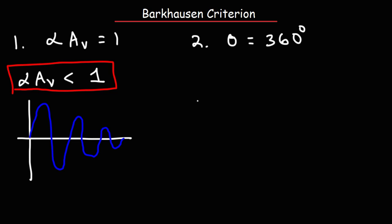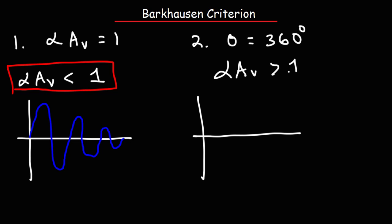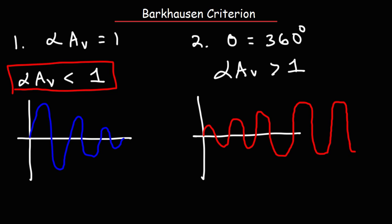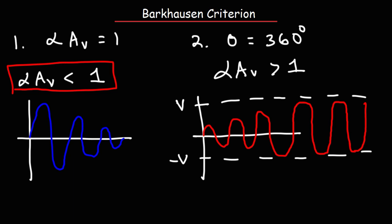If the loop gain is greater than one, the oscillations will occur initially but they will get larger and larger. Eventually they will reach a ceiling where clipping will occur, because there's only so much that the DC power supply can support. The oscillations won't continue growing forever — they will reach a ceiling, which we can call +V and -V.